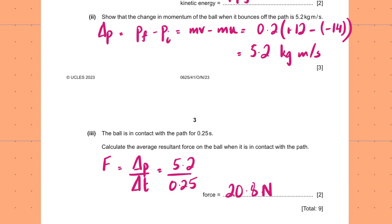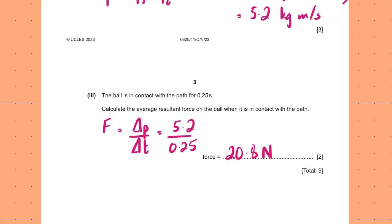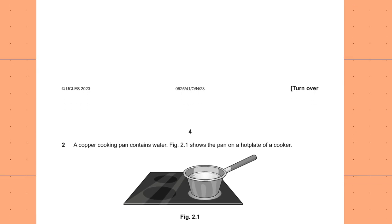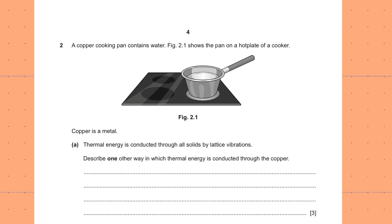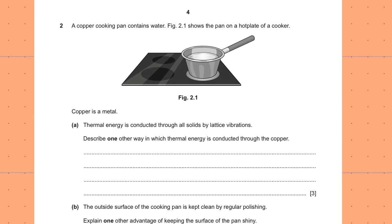That's the solution to the first question. Question number 2: A copper cooking pan contains water. Figure 2.1 shows the pan on a hot plate. Copper is a metal. Thermal energy is conducted through all solids by lattice vibrations.